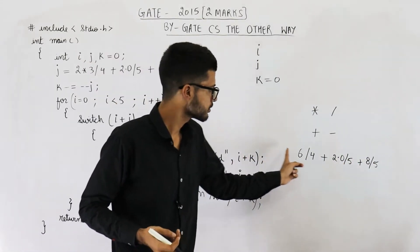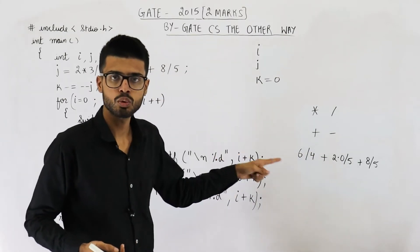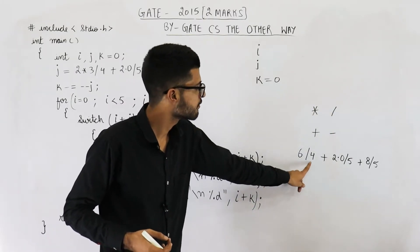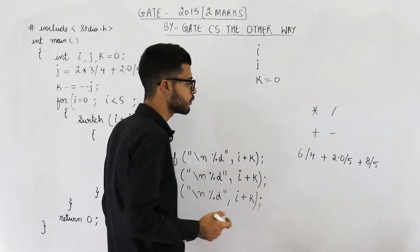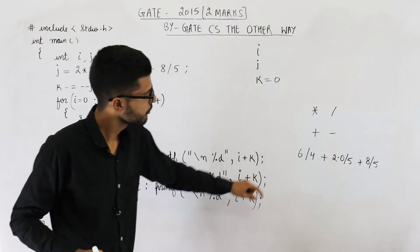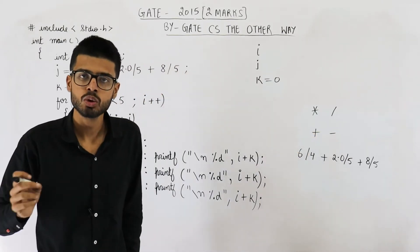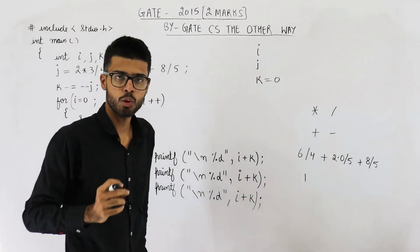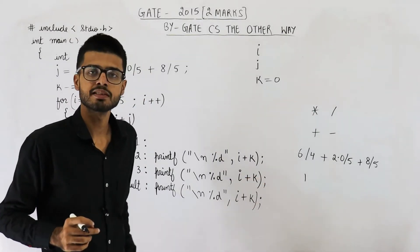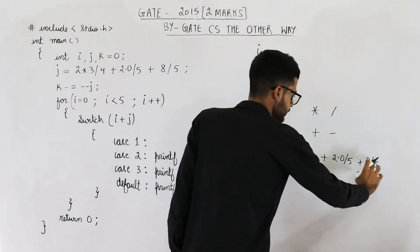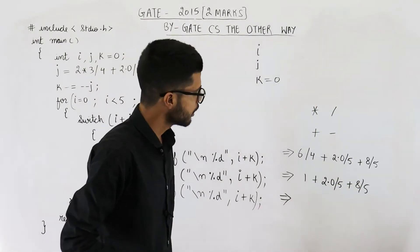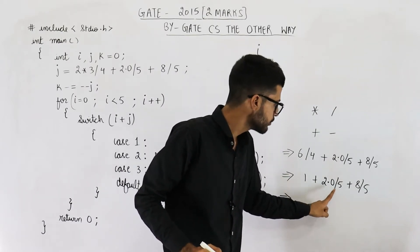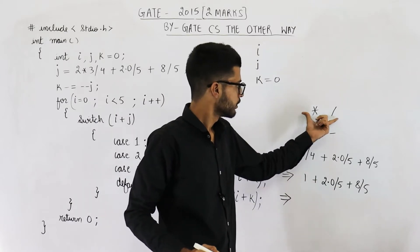In the next step, again scan from left to right. Now 6 divided by 4 will be solved. 6 divided by 4 is 1.5, but since both 6 and 4 are integers, the decimal part 0.5 will be neglected. So the result is 1. The remaining part is copied as it is.